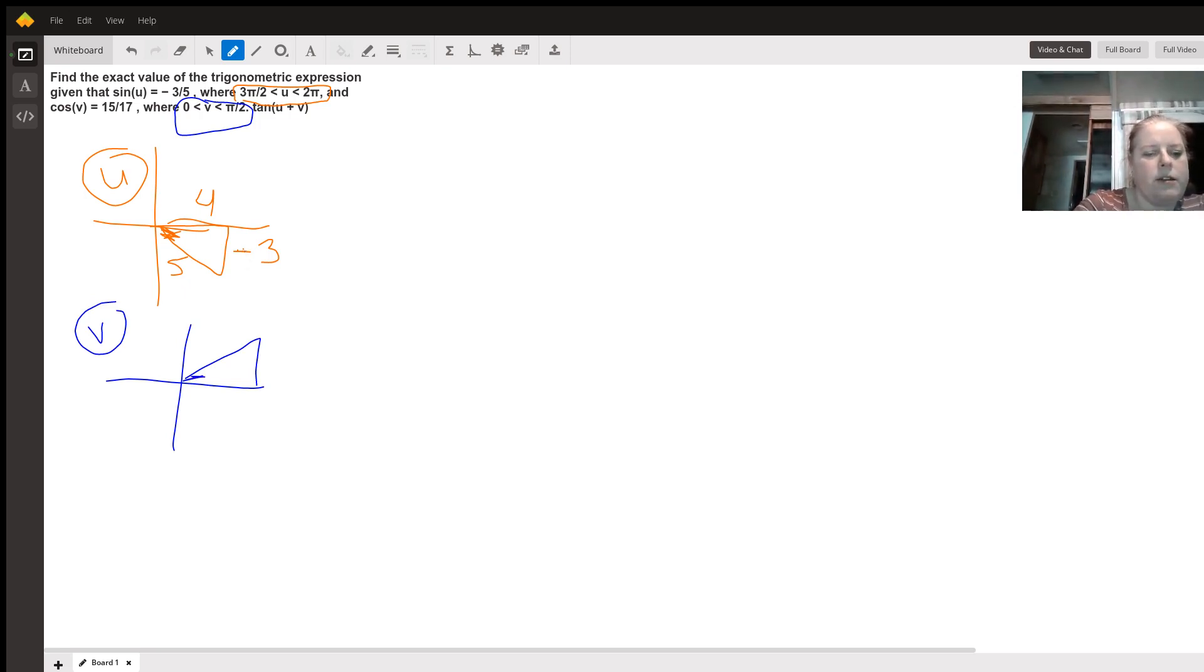Cosine is adjacent, which makes this 15, over hypotenuse 17. If you use Pythagorean theorem here, you'll find that this side is 8.